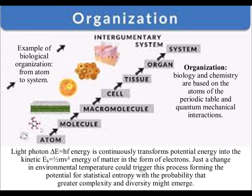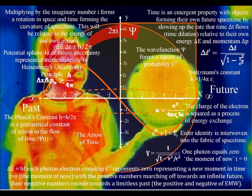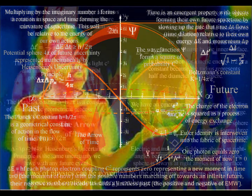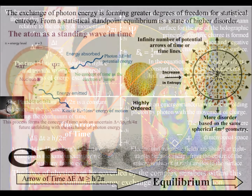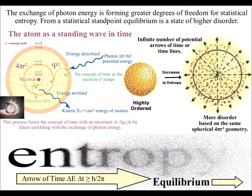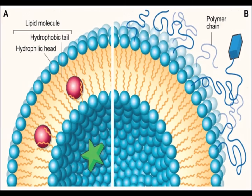According to the third law of thermodynamics, it is impossible to achieve absolute zero. Therefore everything is radiating photon energy continuously. Variations in photon energy are a source for structural information and self-organization of organic and inorganic matter.